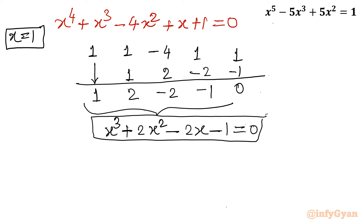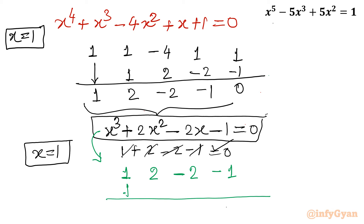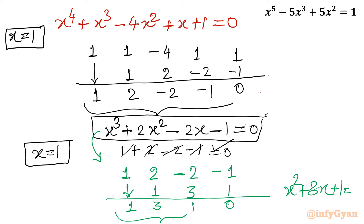Again, putting x equals 1 into the cubic: 1 plus 2 minus 2 minus 1 equals 0. So x equals 1 is again a solution. Writing the coefficients 1, 2, minus 2, minus 1 and applying synthetic division with x equals 1: the result is 1, 3, 1, and remainder 0. The coefficients give the quadratic equation x² plus 3x plus 1 equals 0.